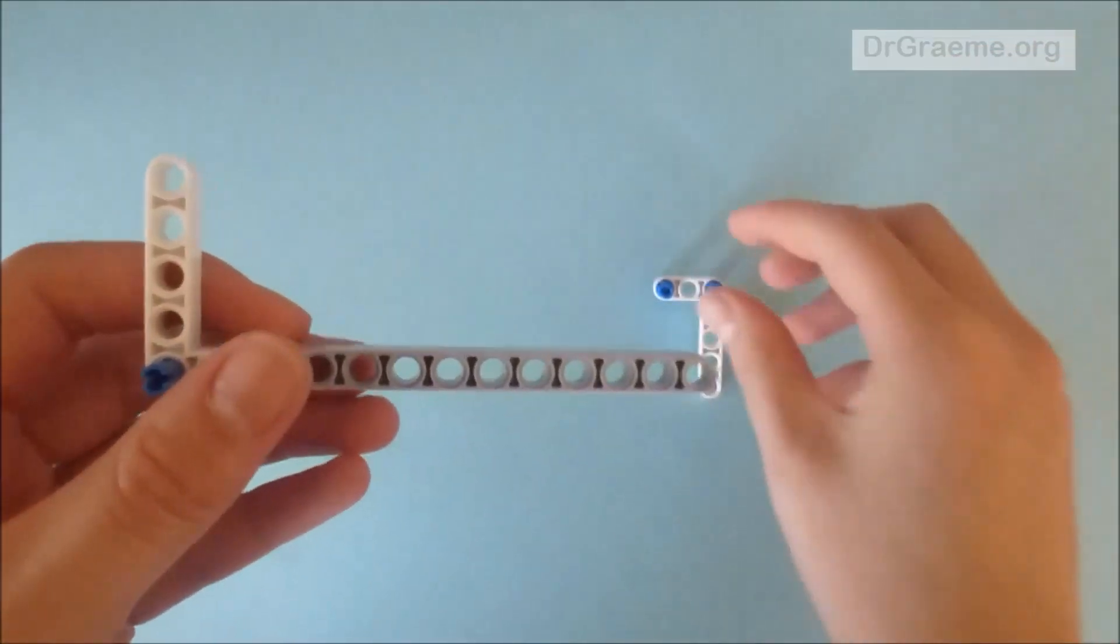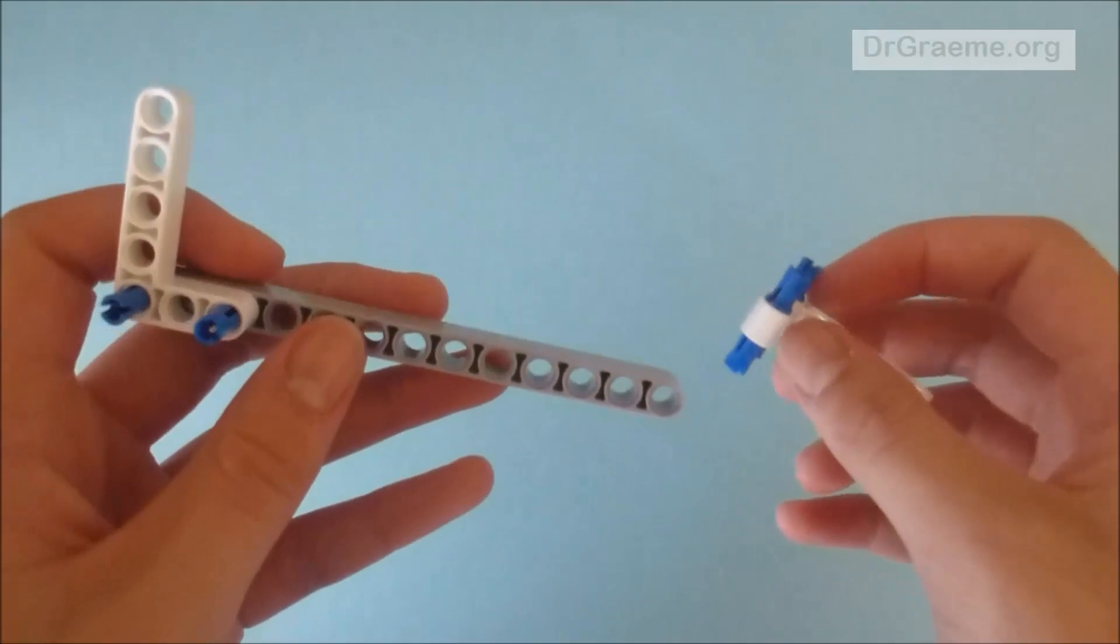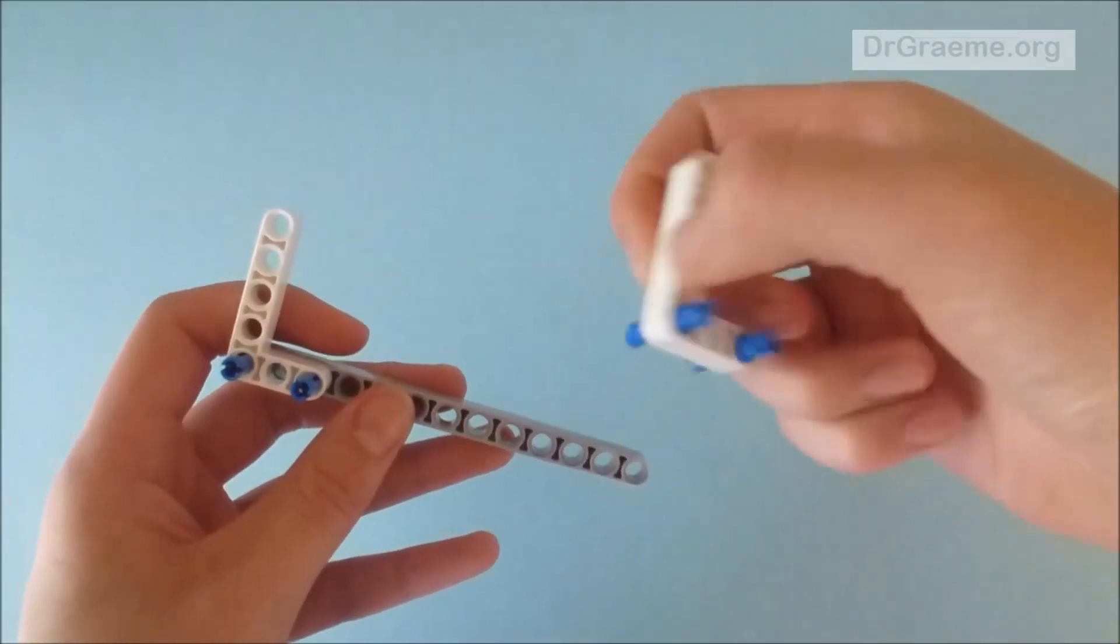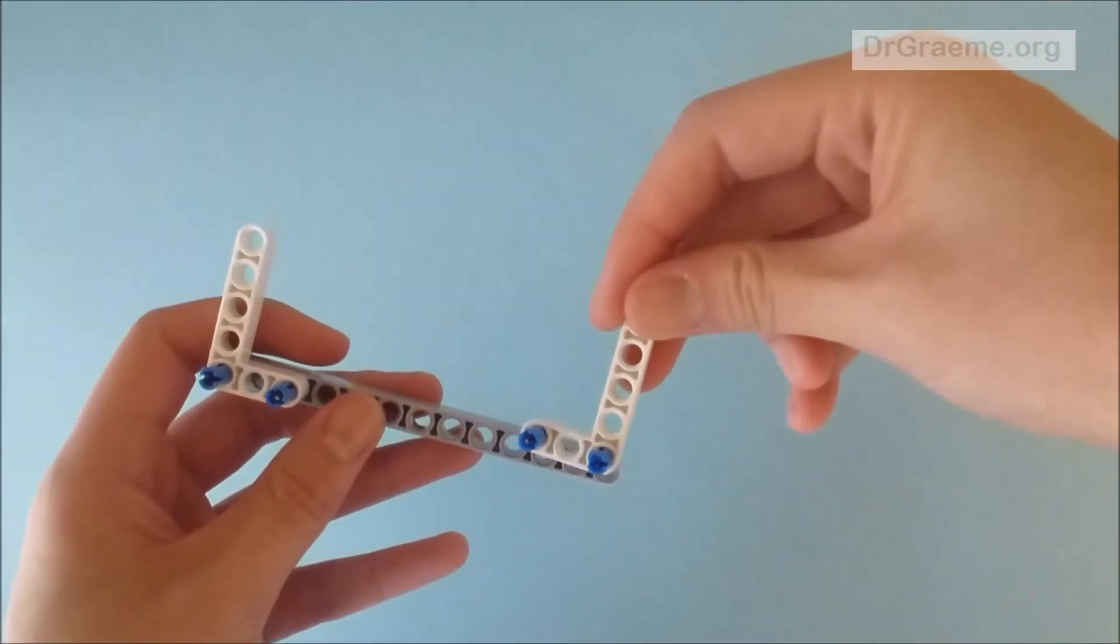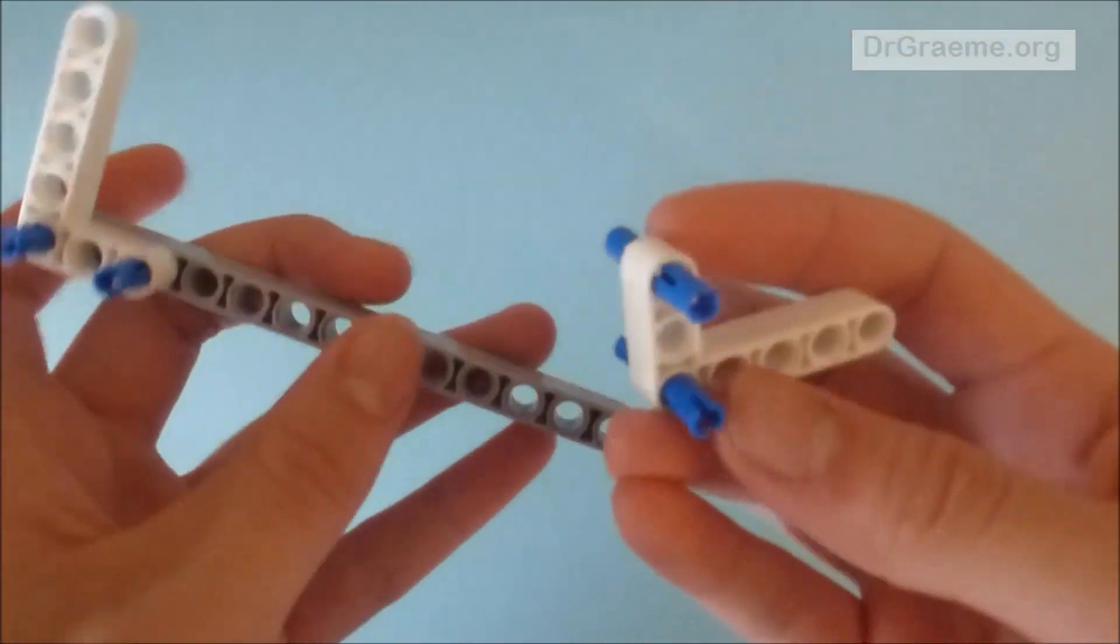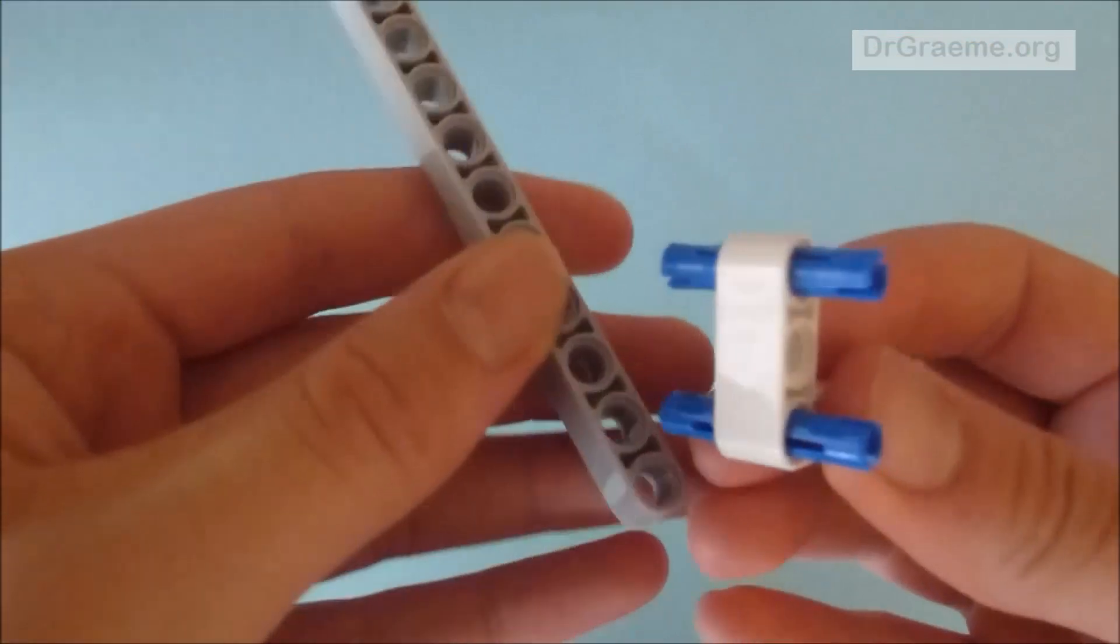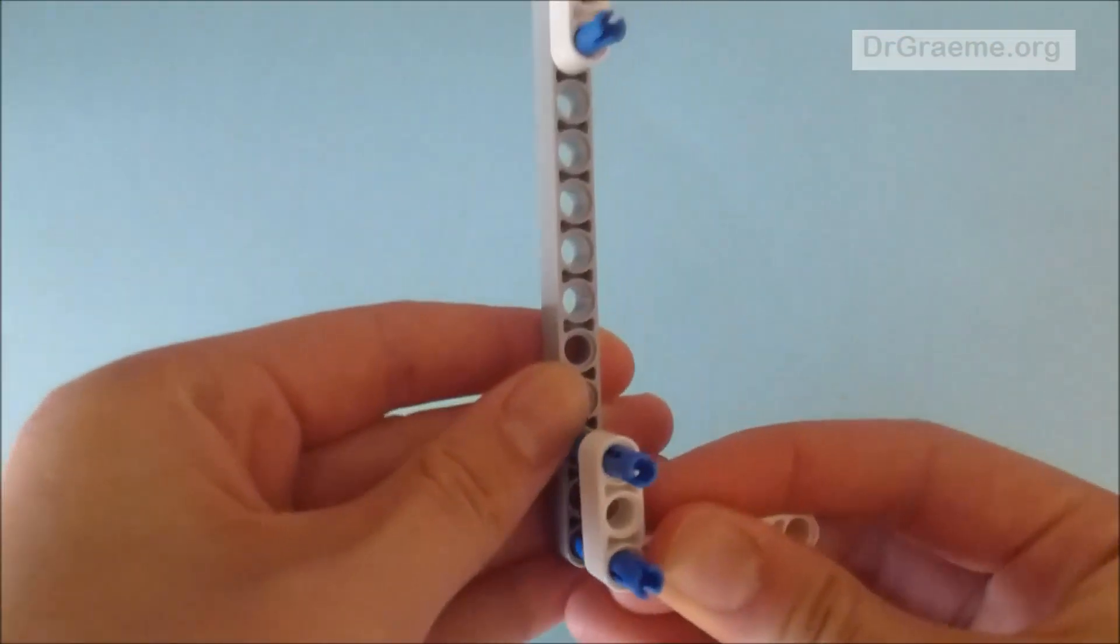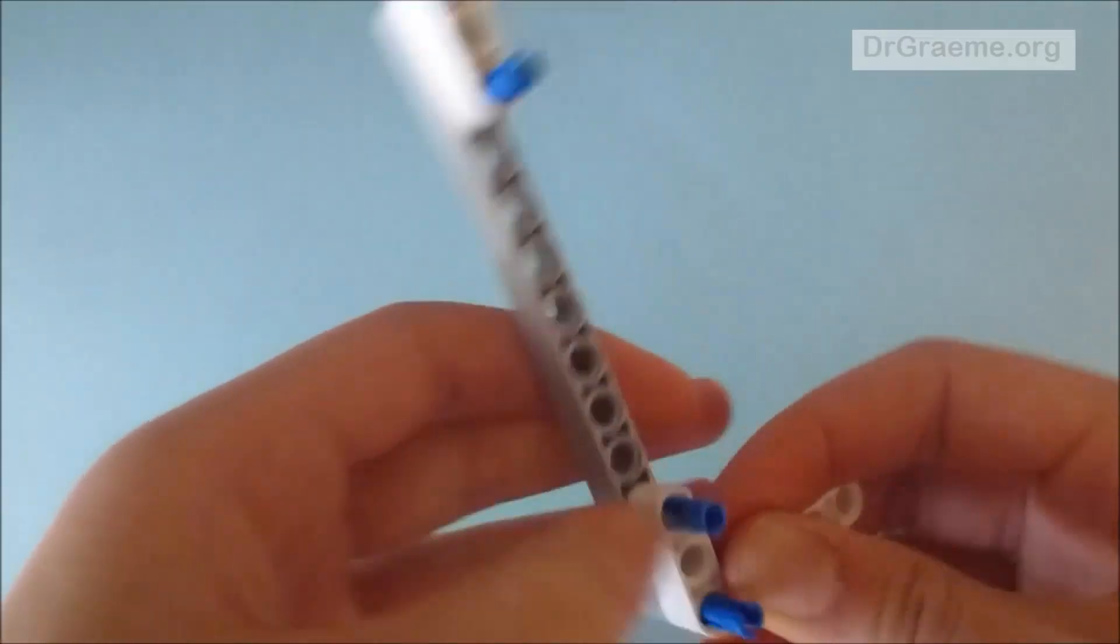Now you do a similar thing with the other side, except instead of having them like this, you want them like this. So the same on the last 3 holes - we add the 2 connections so we clip them together, like so.